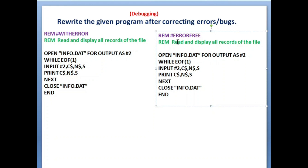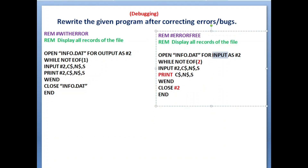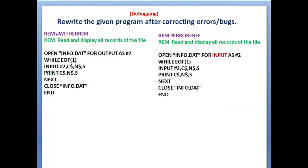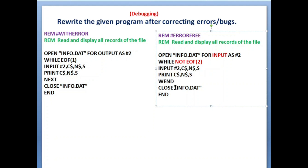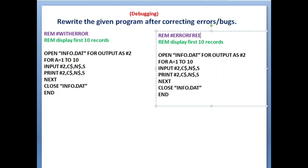Next: 'Read and display all records of the file.' Both 'read' and 'display' mean INPUT mode — that's the first error (wrong mode). The loop condition should be WHILE NOT EOF(2), not WHILE EOF(1). INPUT #2 to read the data, and the loop ends with WEND. Missing WEND is the third error, and CLOSE #2 (not the file name) is the fourth error. Four errors corrected.